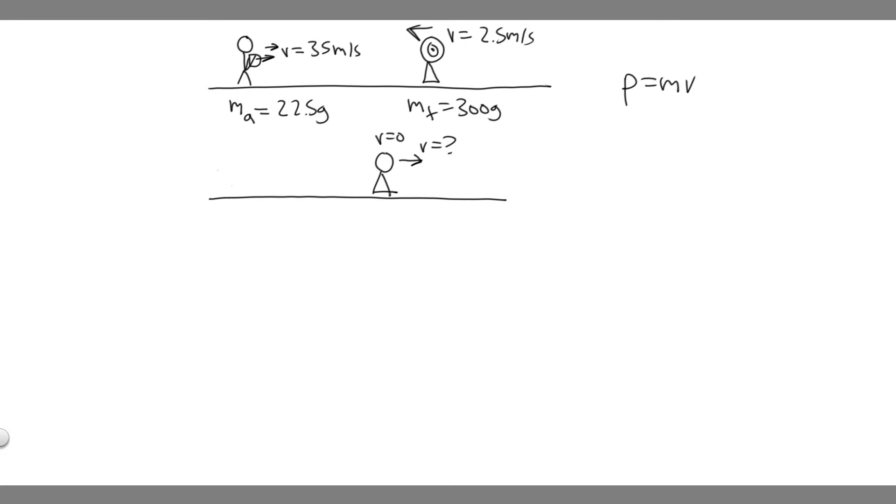The two objects in this case are the arrow and the target. So basically you just want to write out this formula: m1v1 plus m2v2 equals m1v1 final plus m2v2 final.